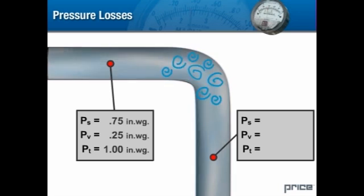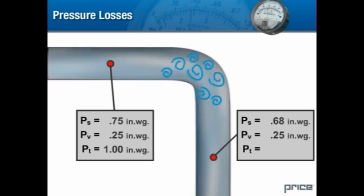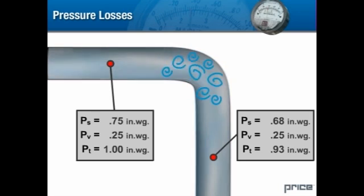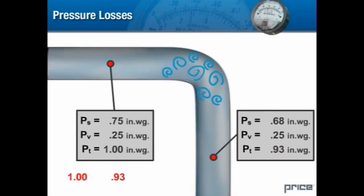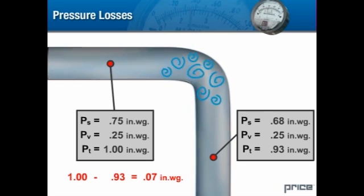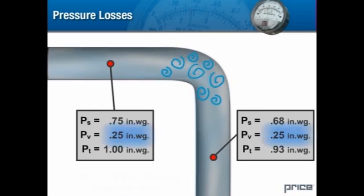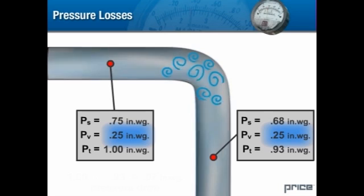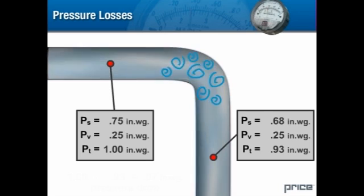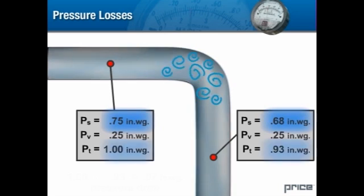On the downstream side of the transition, we measure the static pressure at 0.68 inches of water and the velocity pressure at 0.25 inches of water for a total pressure of 0.93 inches of water. Comparing the total pressure upstream and downstream of the transition, we see that the total pressure loss in this case is 0.07 inches of water — we call this a pressure drop. Note that the velocity pressure is the same upstream and downstream of the transition. In a duct of constant cross-section, the velocity pressure should be the same no matter where you measure it along the length of the duct. However, obstructions and transitions such as elbows will cause a drop in static pressure and therefore in the total pressure.